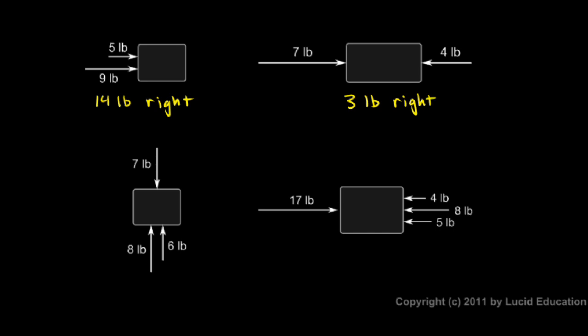Another way to think of that is what we were just talking about with the positive and negative. Think of the 7 pounds as positive because it's to the right, and we typically think of right as being positive, and the 4 pounds is to the left, so that's negative. And then we add the 2 up. We add 7 and negative 4, and that gives us a total of positive 3, or 3 to the right.